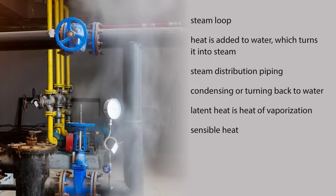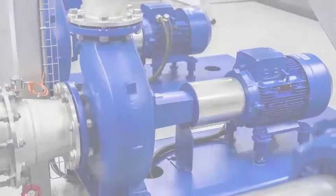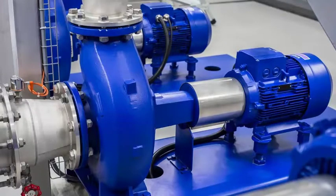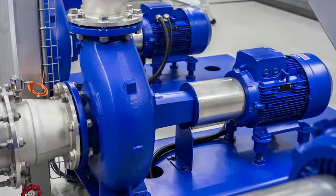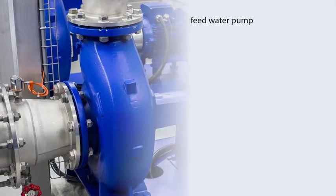When steam gives up its latent energy, it condenses and turns back into water called condensate. The condensate is returned back to a holding tank or a deaerator, where it is processed and conditioned for reuse. At this point, the condensate water's pressure is increased substantially by a feed water pump and returned to the boiler to be heated and converted again to steam.